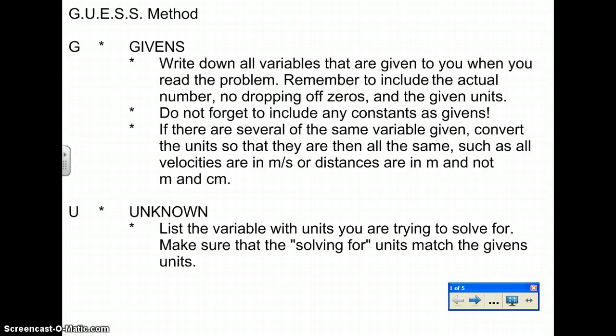The G stands for Givens. Write down all variables that are given to you when you read the problem. Remember to include the actual number, not dropping off zeros, in the given units. Do not forget to include any constants as givens. If there are several of the same variable given, convert the units so that they are all then the same, such as all velocities are in m/s or all distances are in m and not m and cm.